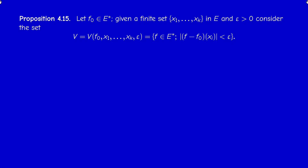By symmetry we have a proposition: given f₀ ∈ E*, finitely many points x₁, …, x_k in E (not in E**), and ε > 0, the set V = {f ∈ E* : |（f − f₀)(xᵢ)| < ε for all i} is a kind of weak-star ball with several centers and one radius. These sets play a role similar to balls in a metric space and are easier to work with.